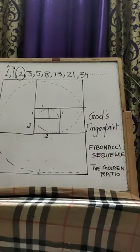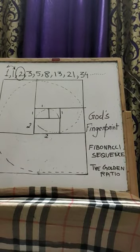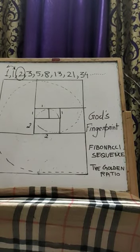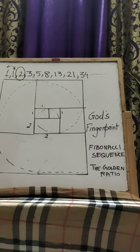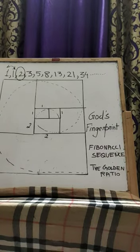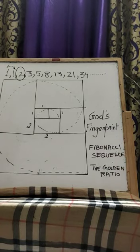God's fingerprint. Now what is this God's fingerprint all about? There are about 6.5 billion people on the face of this earth.